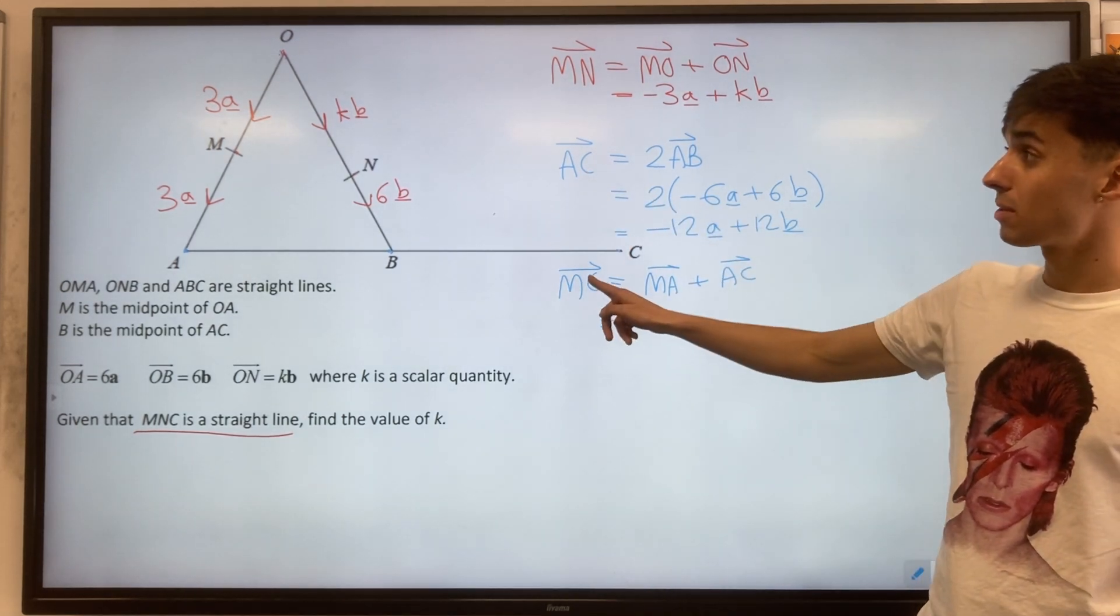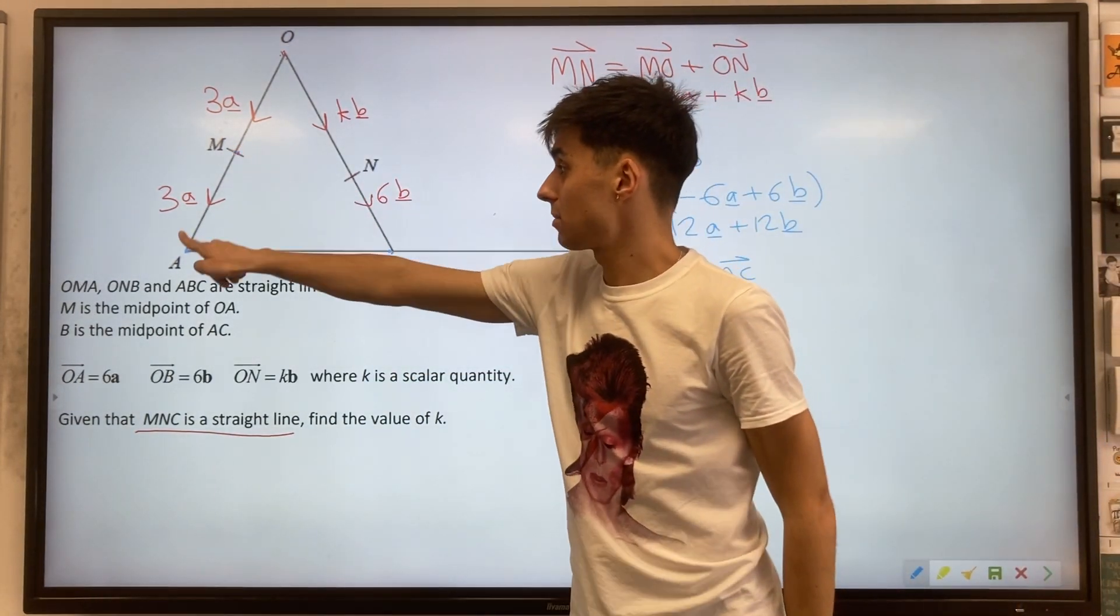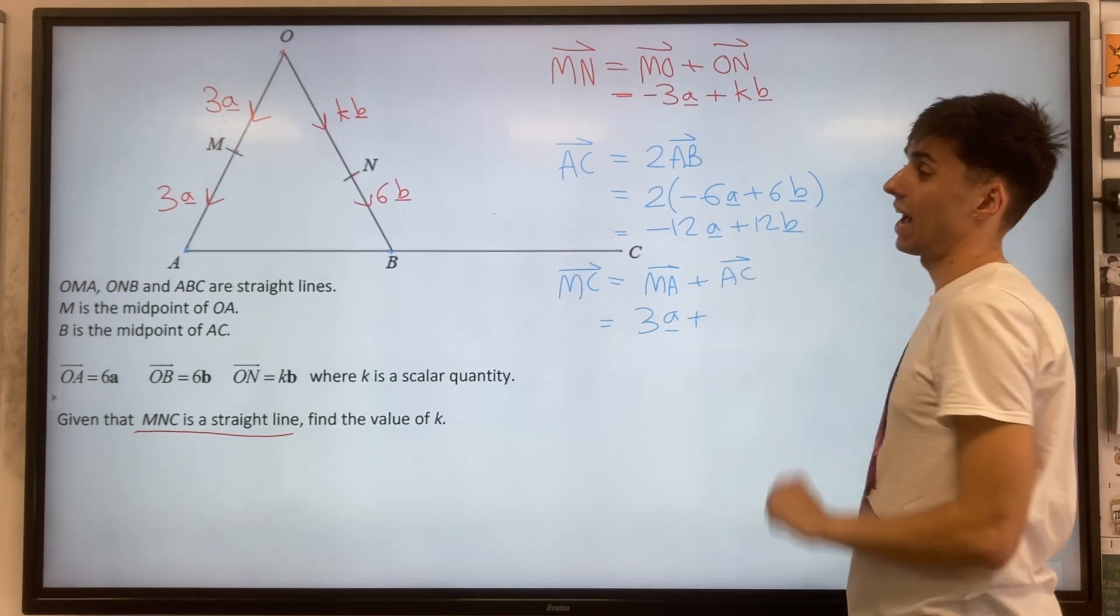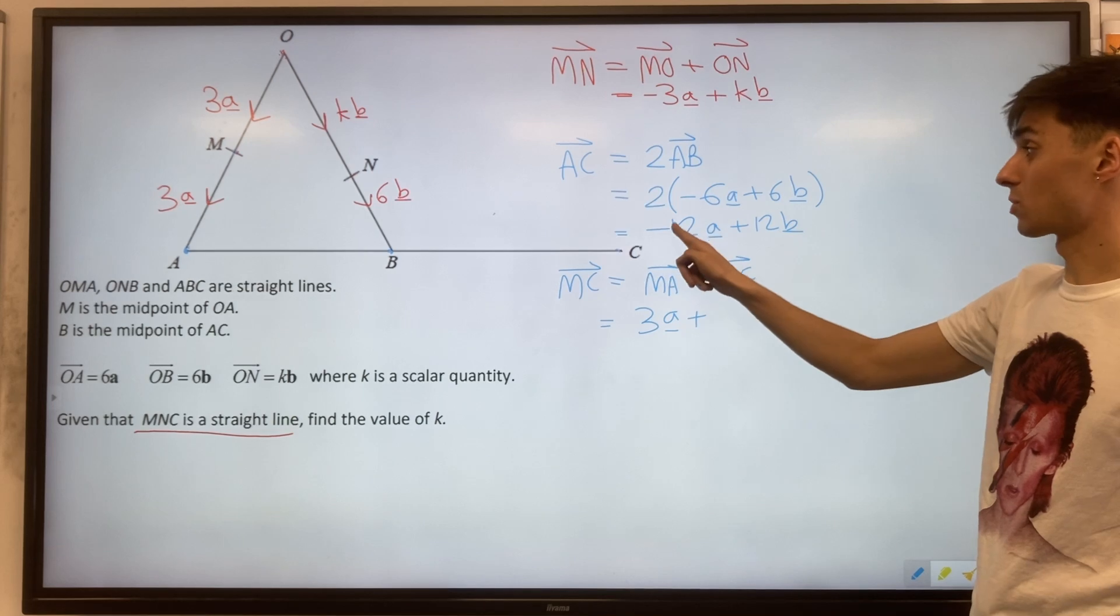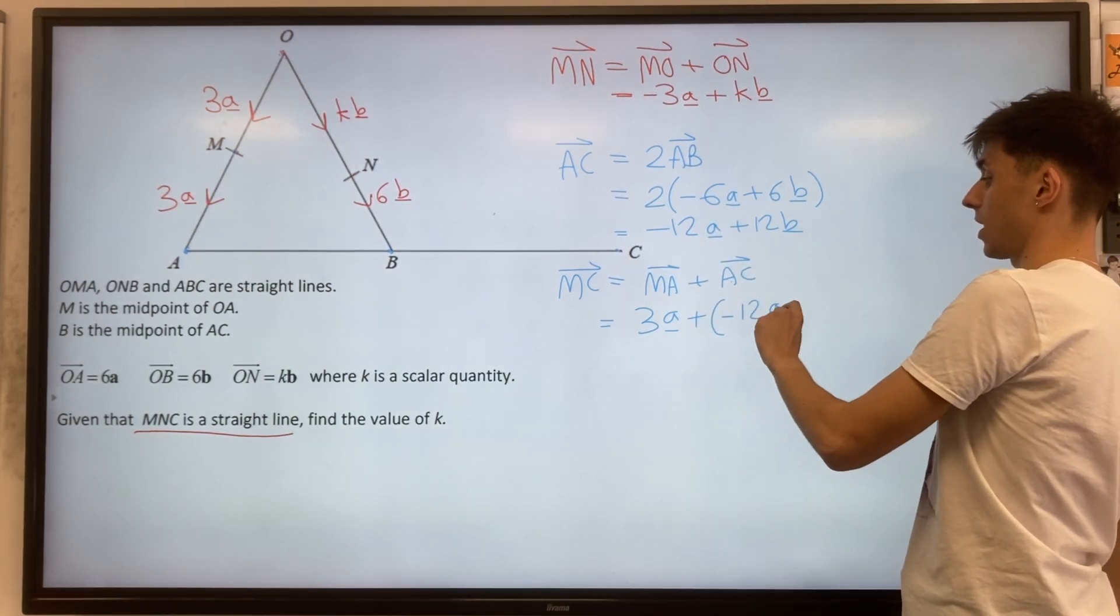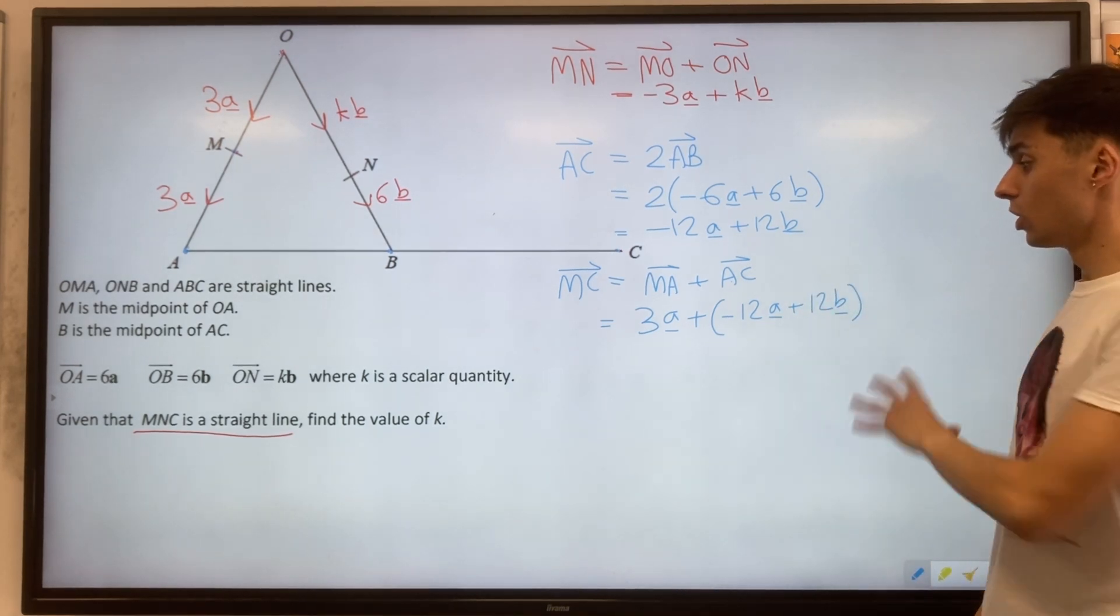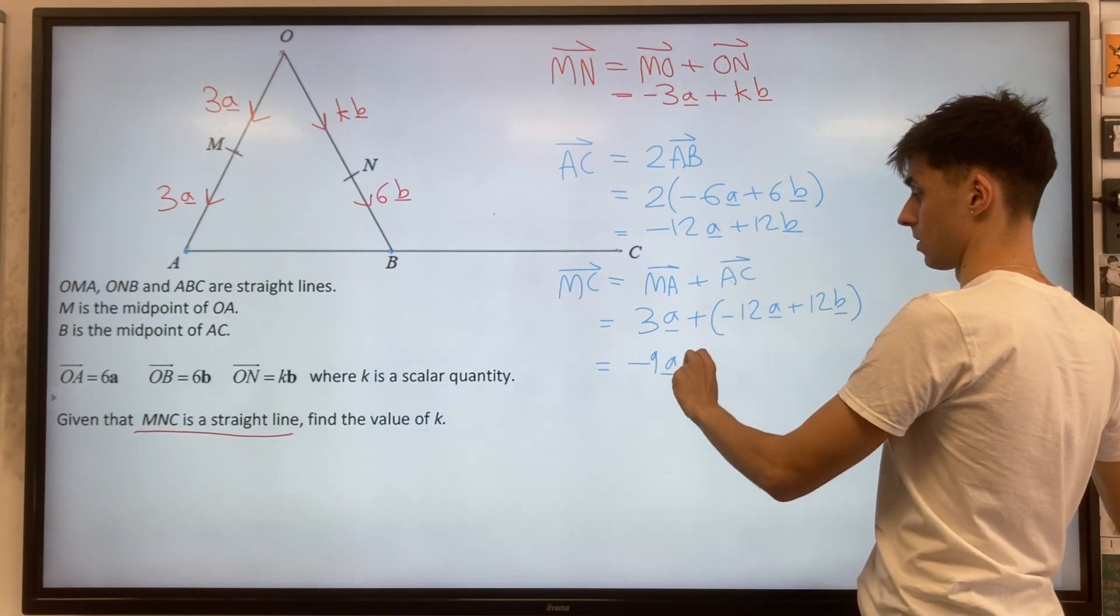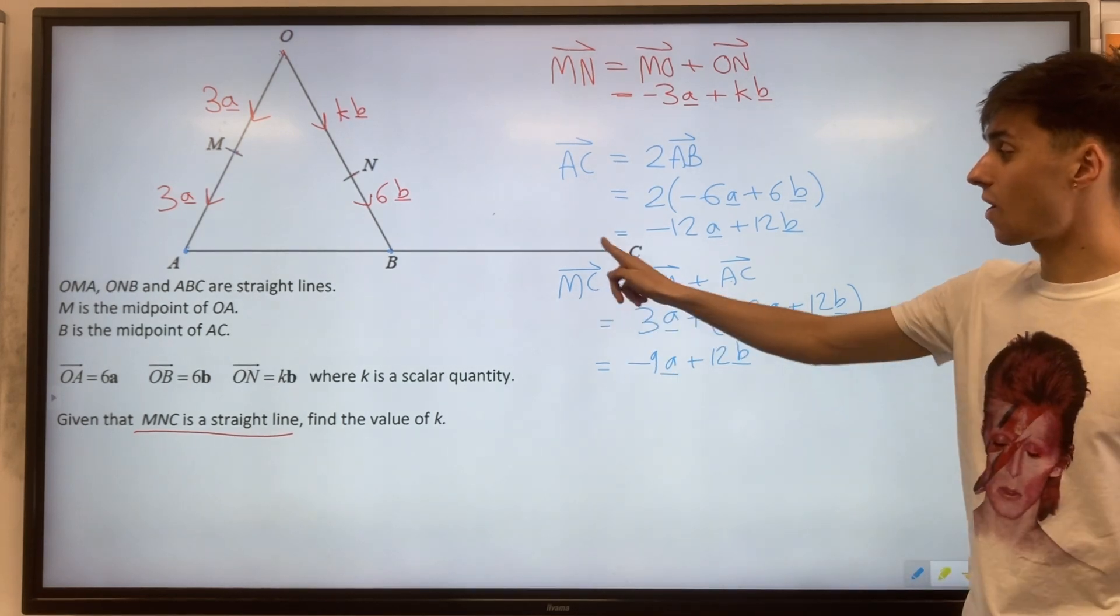So it's actually just a small tweak to our AC vector. From MC, sorry, I mean MA. MA is 3a. And now we want to add our AC. So that was minus 12a plus 12b for AC vector. Sorting these out then, we're going to get minus 9a plus 12b. So this is our MC.